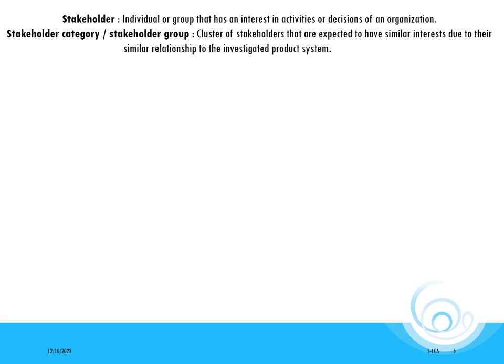During the goal and scope phase, we start by identifying relevant stakeholders — in other words, individuals or groups that are concerned directly or indirectly by an organization's activities or decisions.